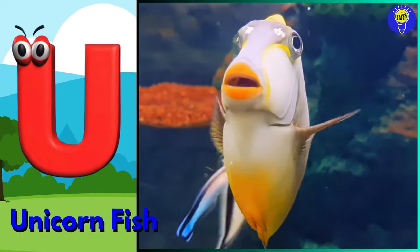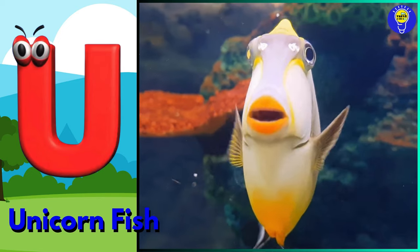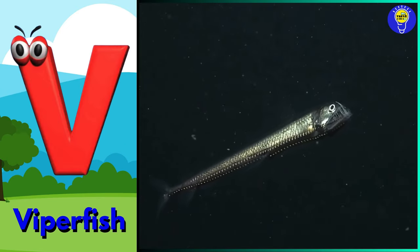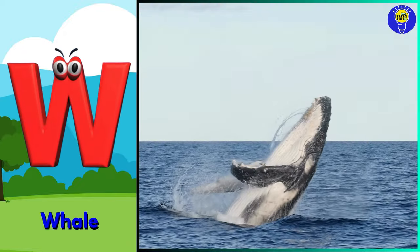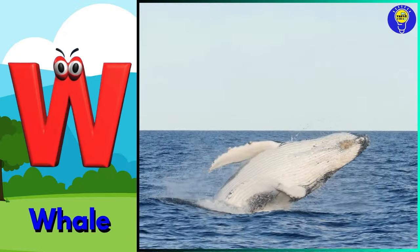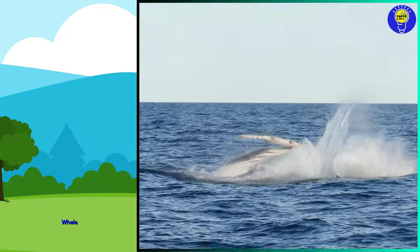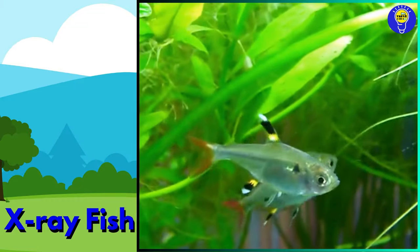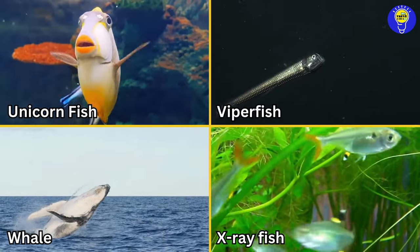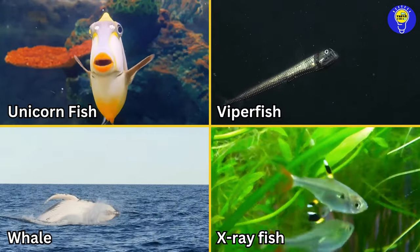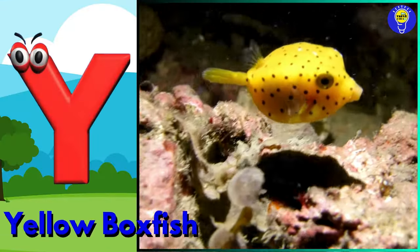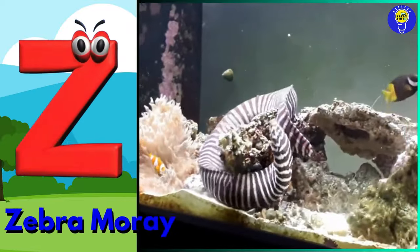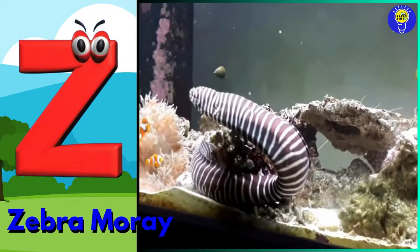U is for unicornfish. V is for viperfish. W is for whale. X is for x-ray fish. Y is for yellow boxfish. Z is for zebra moray.